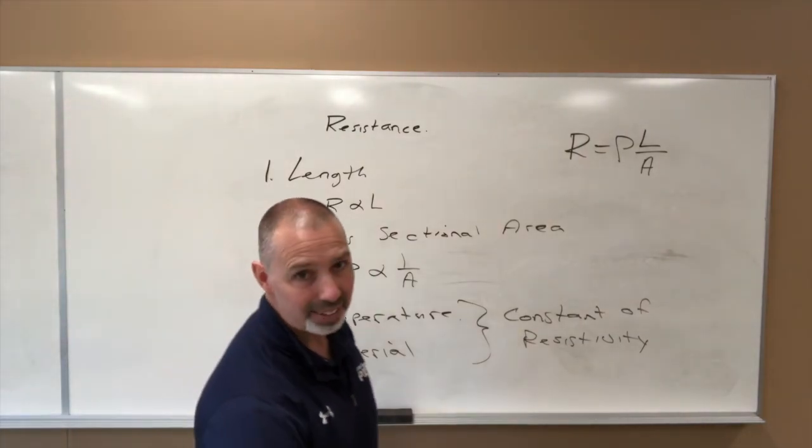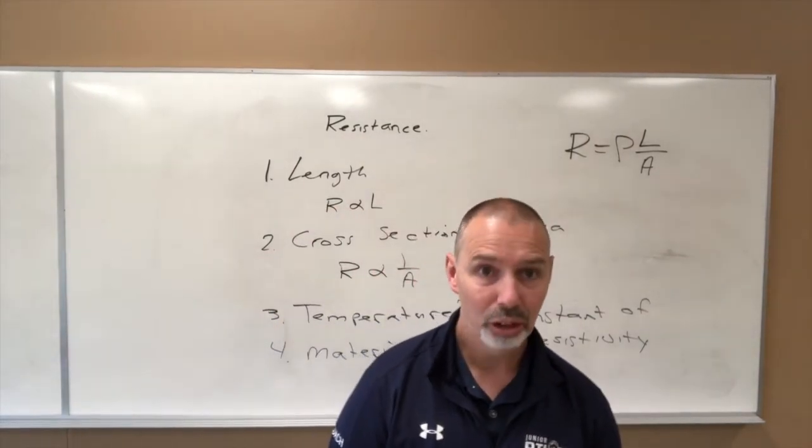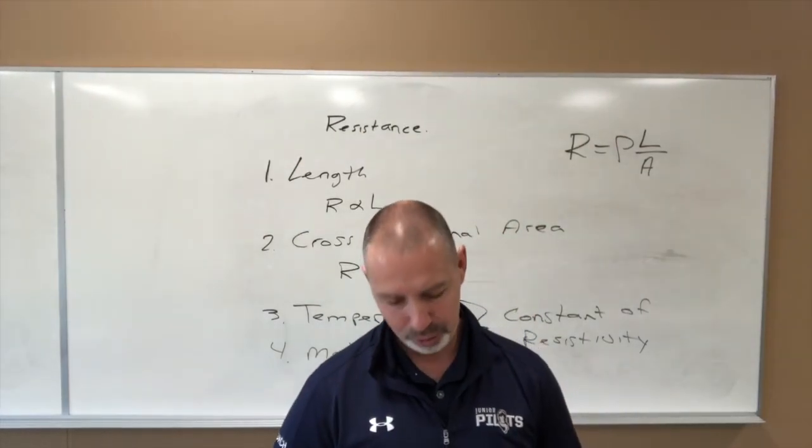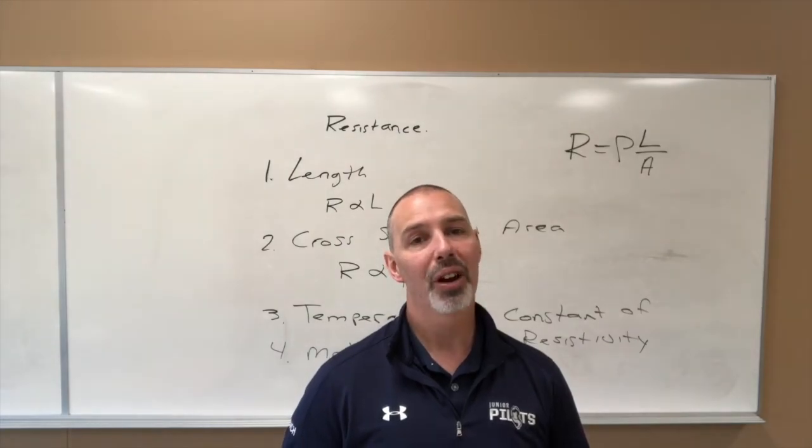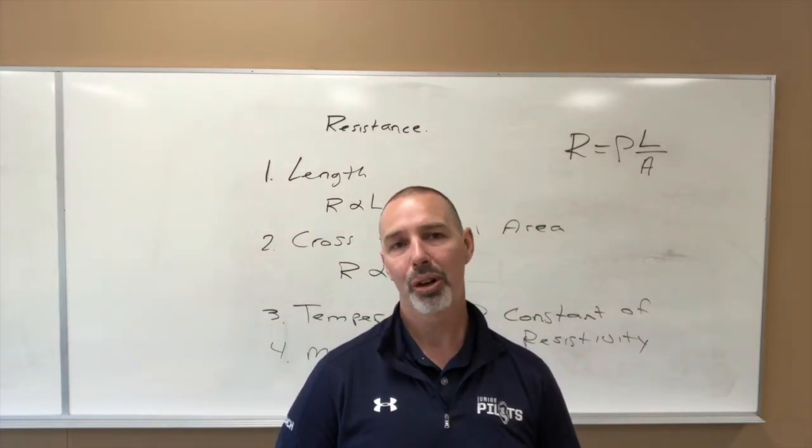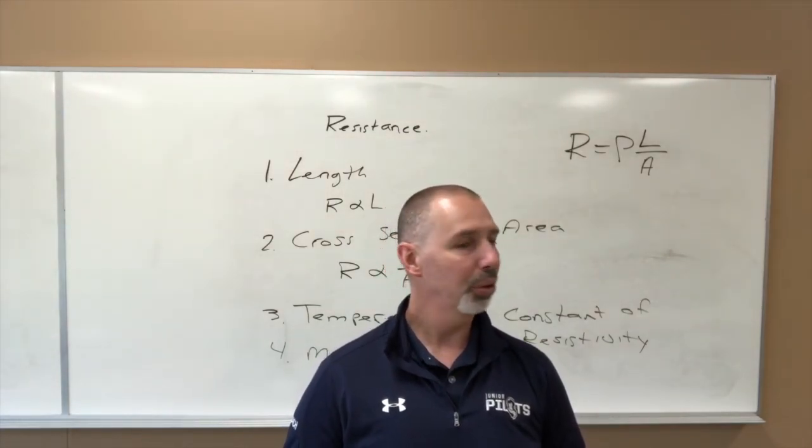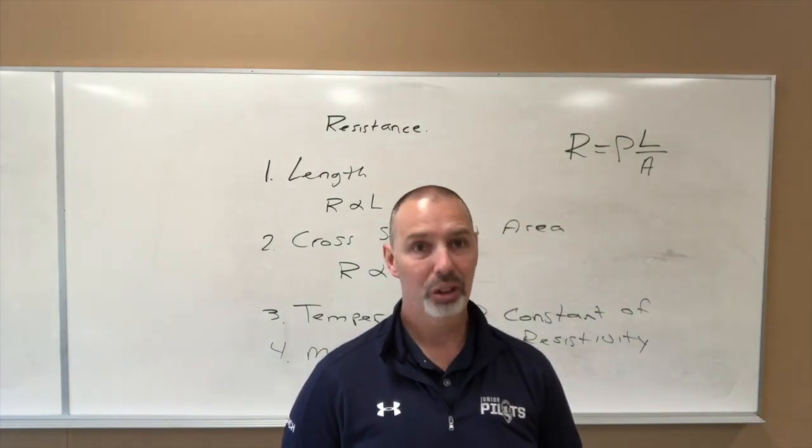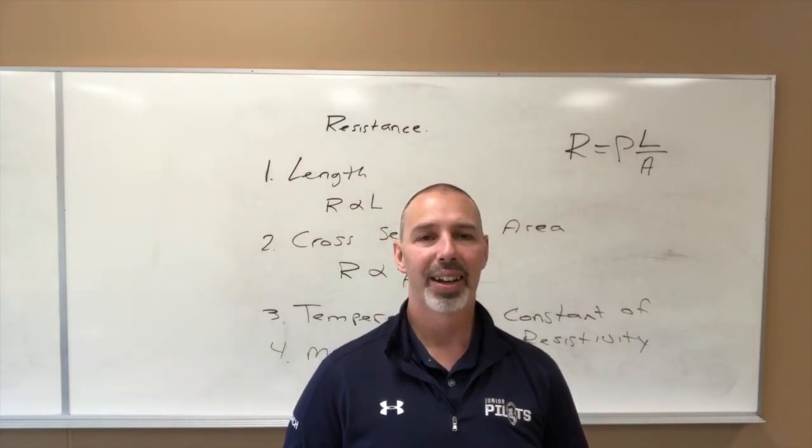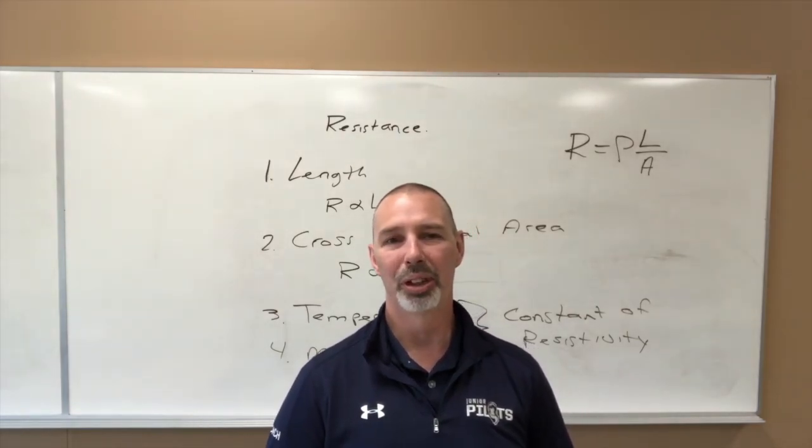We're going to leave it at that today. You are going to do a few questions off a handout, a few questions using the formula V equals IR. Again, a fairly simple, straightforward, three-variable formula. Given two of the three, you should be able to solve for the third variable, and so it'll be six questions long. You'll find that on Connect. Have a great day. See you tomorrow.